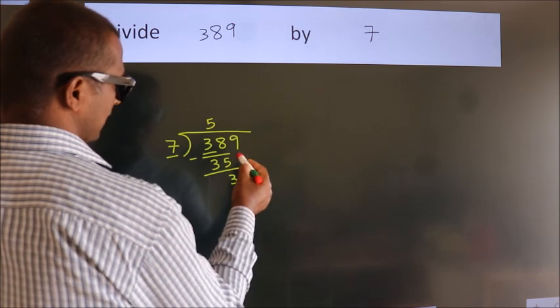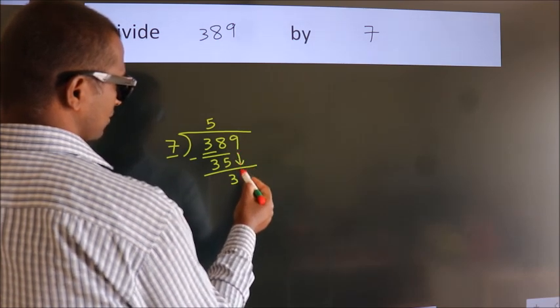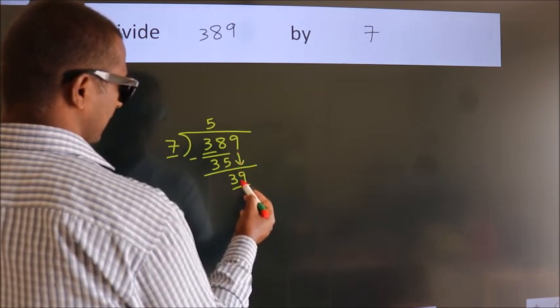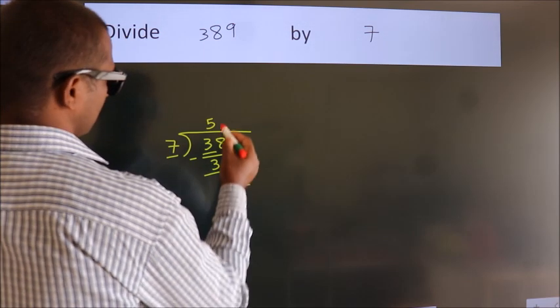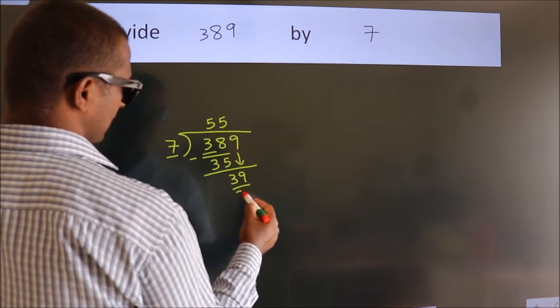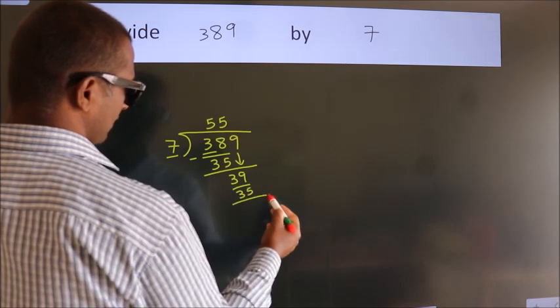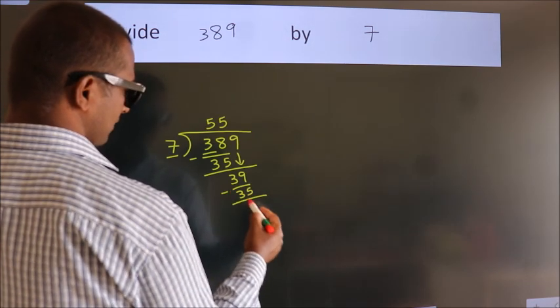After this, bring down the beside number. So, 9 down. So, 39. A number close to 39 in 7 table is 7 fives 35. Now, we subtract. We get 4.